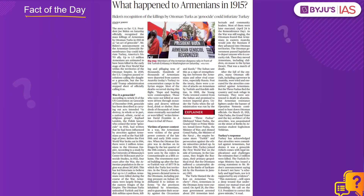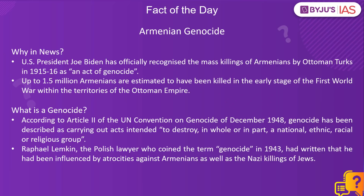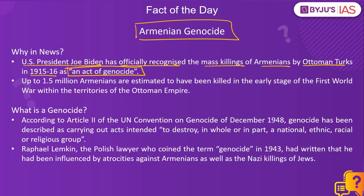Now, for the fact of the day, let's look at an article in The Hindu about the Armenian genocide. This topic is in news because U.S. President Joe Biden has officially recognized the mass killings of Armenians by the Ottoman Turks back in 1915-1916 as an act of genocide. It is estimated that up to 1.5 million Armenians were killed during the early stages of the First World War as a result of atrocities committed by the then Ottoman Empire. Let's understand what genocide is, what atrocities were inflicted on the Armenians, and how this has become a diplomatic issue between the U.S. and Turkey.